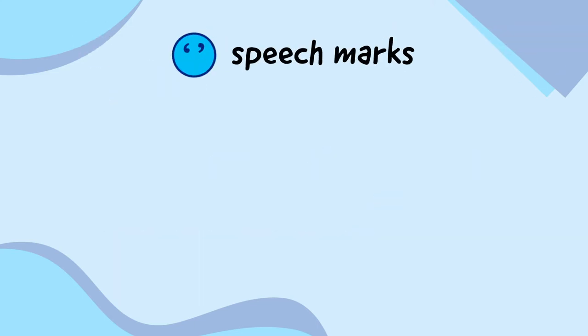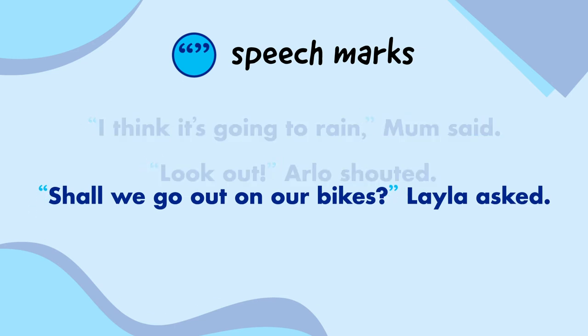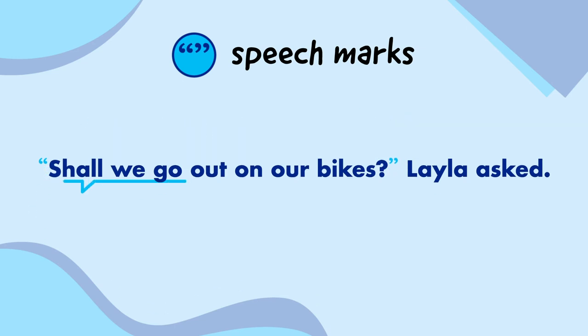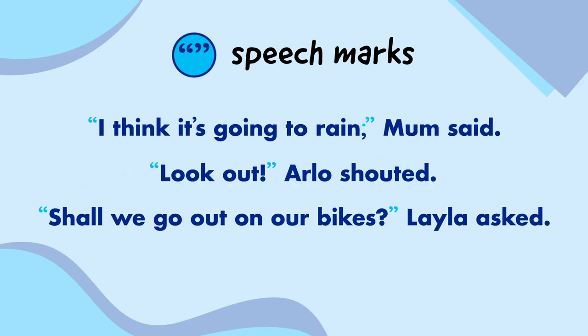Speech marks can either be single or double, and are used to show when someone is talking. For example, 'Shall we go out on our bikes?' Layla asked. Only the bits that are spoken go inside speech marks, which shows that Layla said this sentence, but she didn't say this sentence. Other punctuation, like commas, exclamation marks, and question marks, go inside speech marks too.